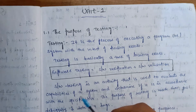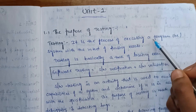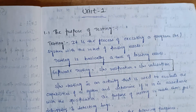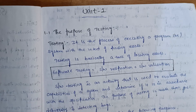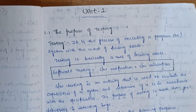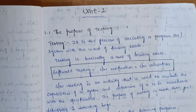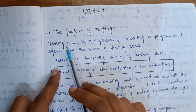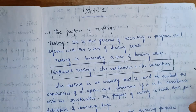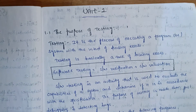So, what is testing? Testing is the process of executing a program or system with the intent of finding errors. Testing is basically a task of locating errors — finding errors is the main task. So this definition is to find errors.